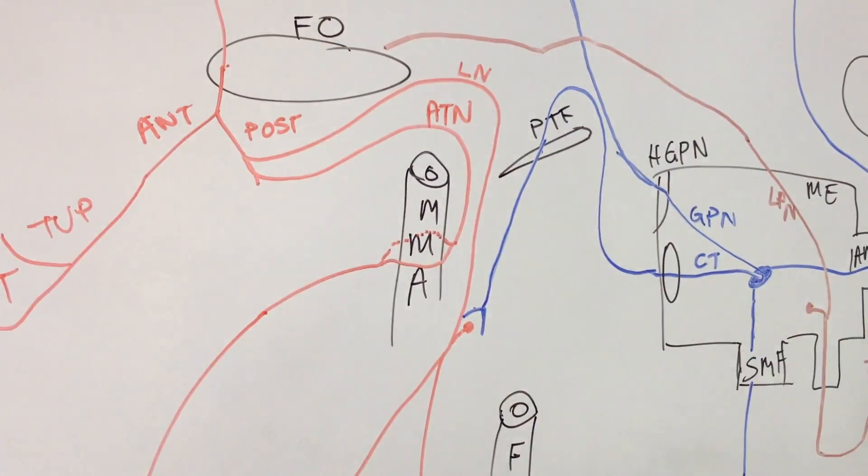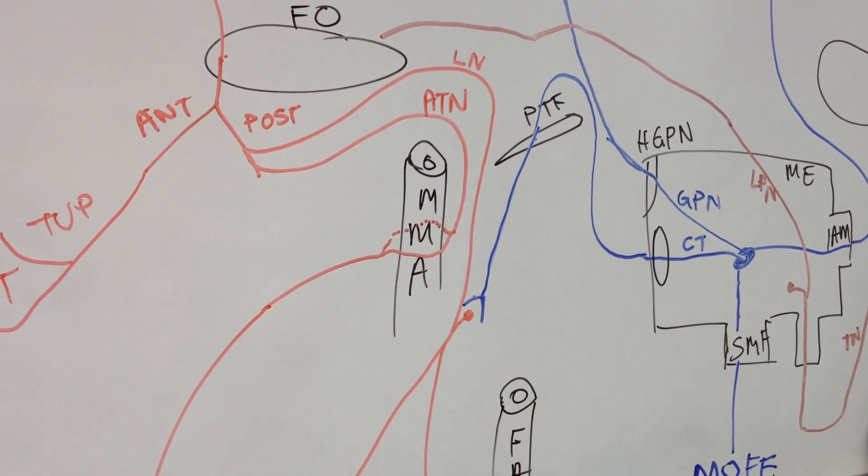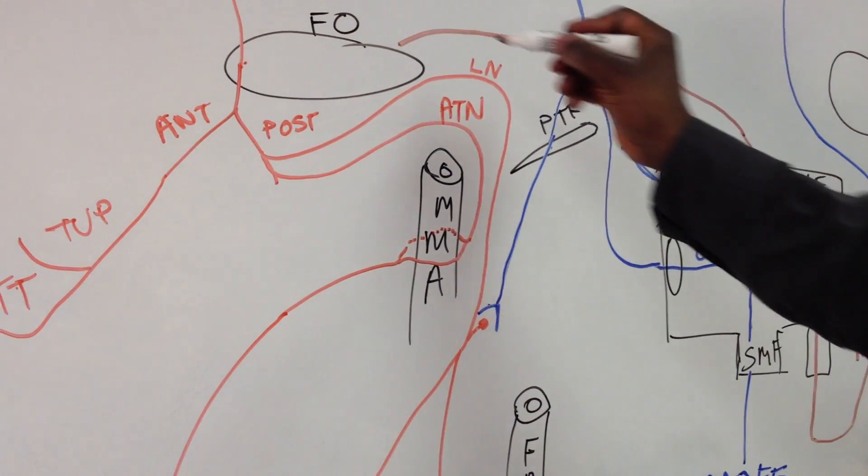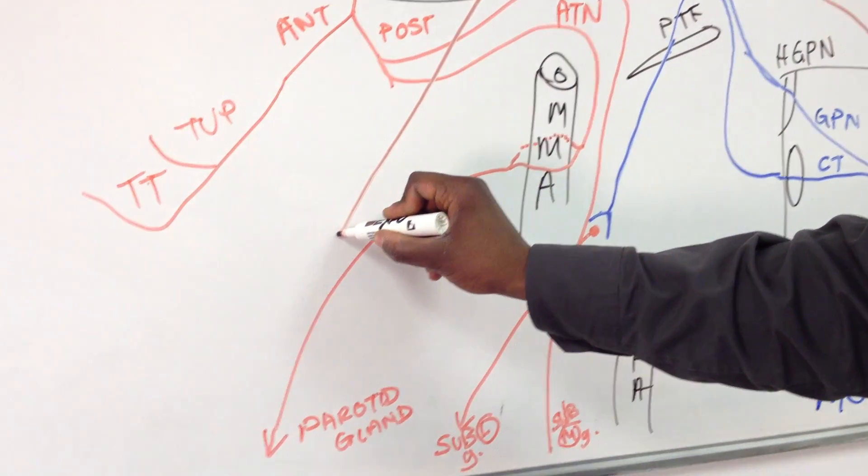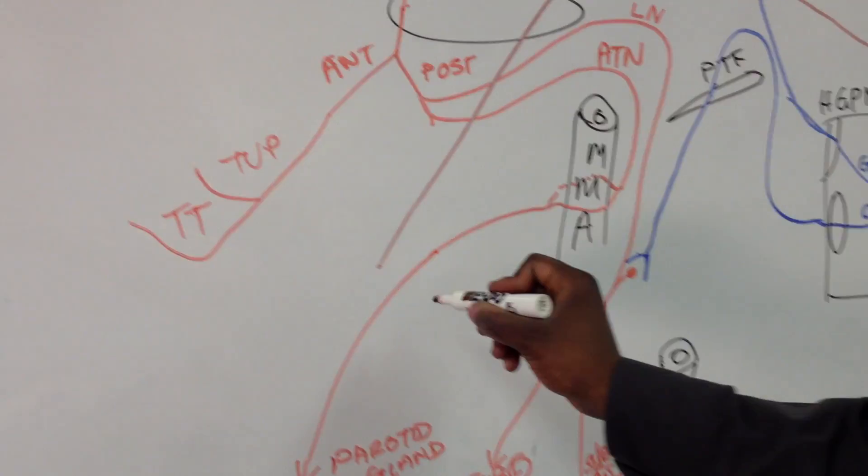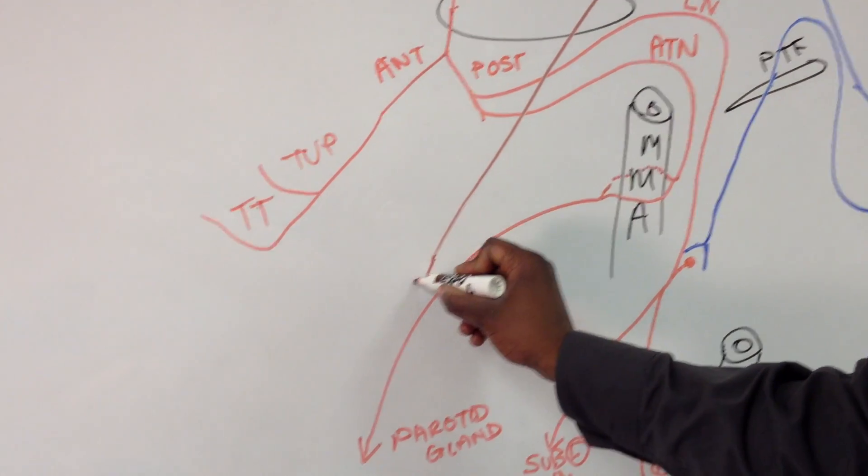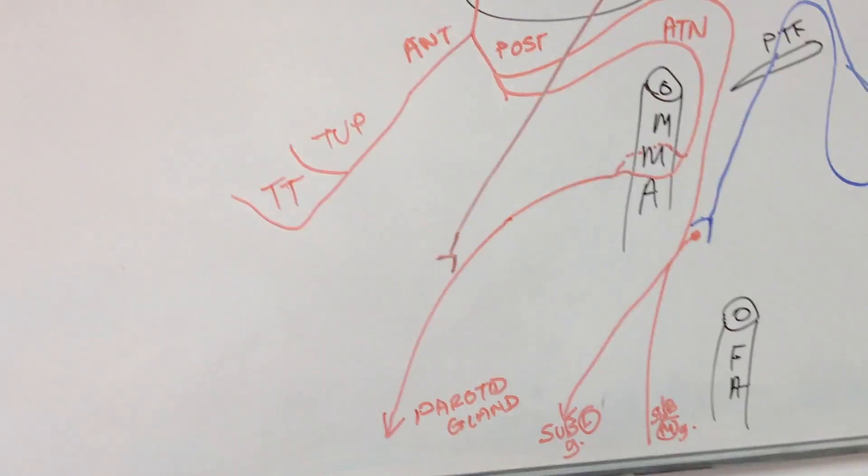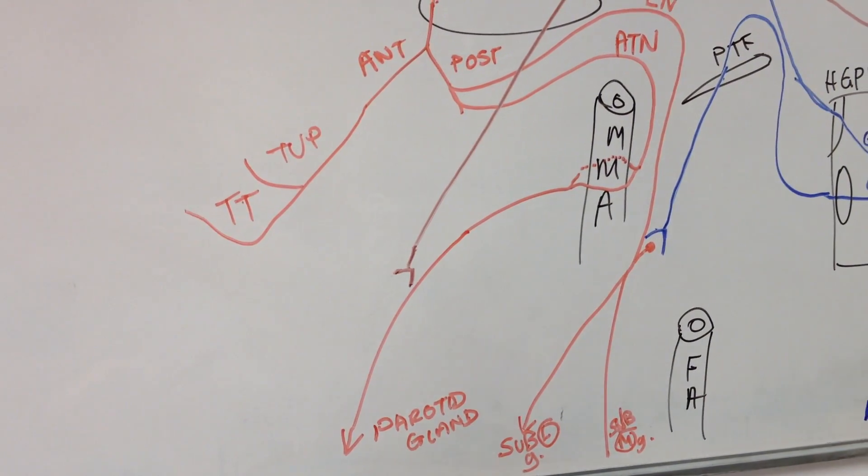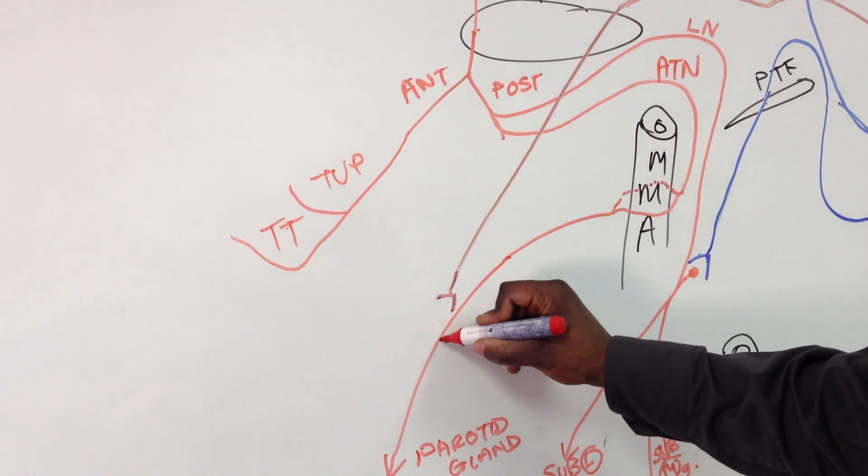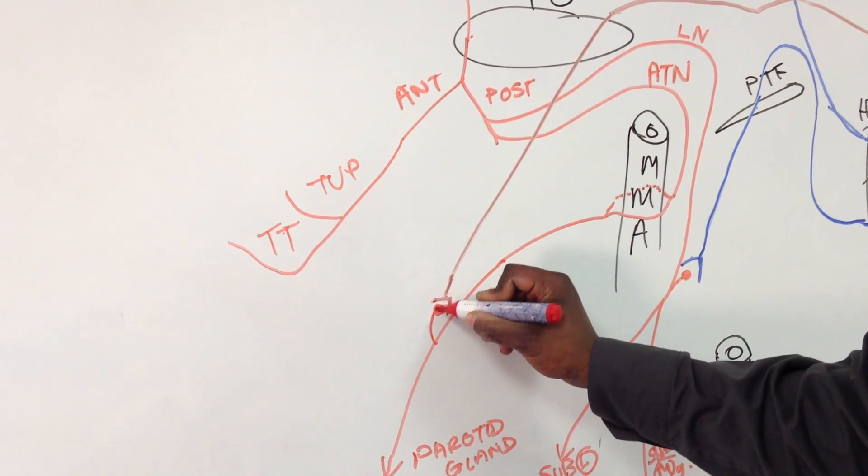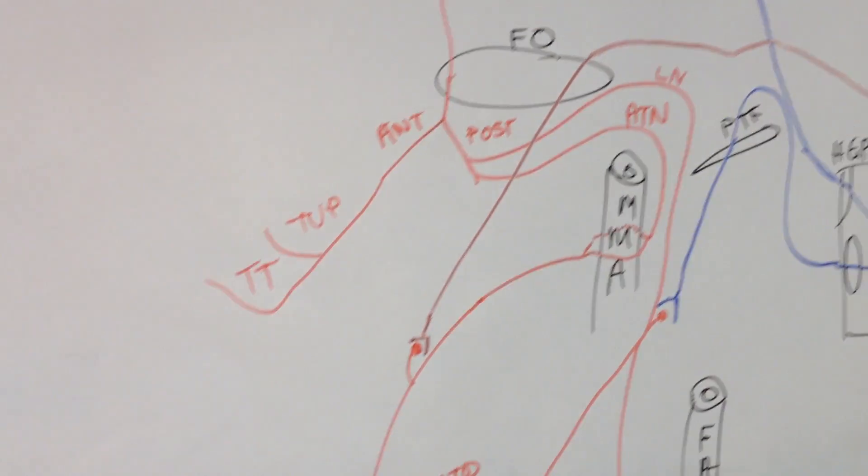It's going to come down through the foramen of valley and head onto the area where the greater auricular nerve is. That's where it will terminate. There's a little contribution there.